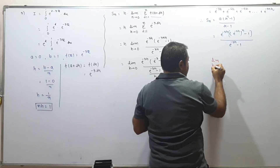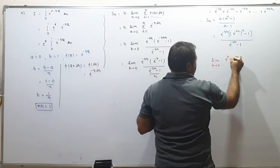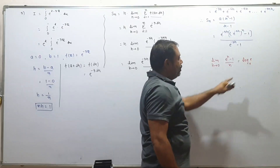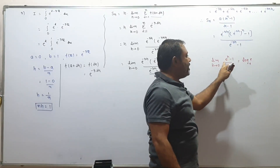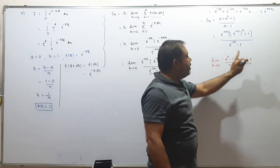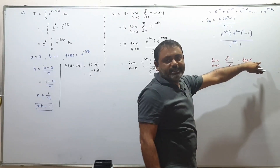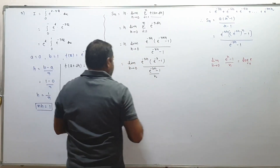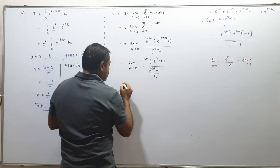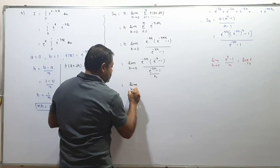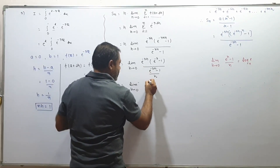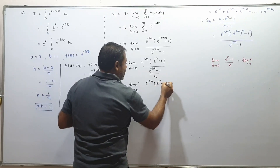The basic formula to remember: limit h tends to 0 of (e^(ah) - 1)/h equals a times log_e(e) equals a. So if we need limit h tends to 0 of (e^(minus 3h) - 1)/h, multiply and divide by minus 3. We get: minus 3 times limit of (e^(minus 3h) - 1)/(minus 3h) equals minus 3.